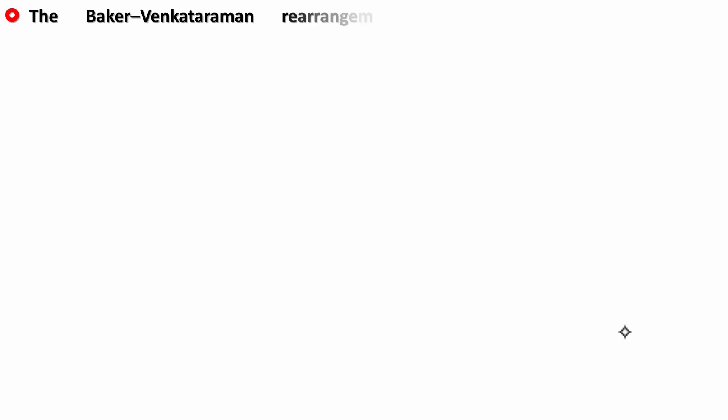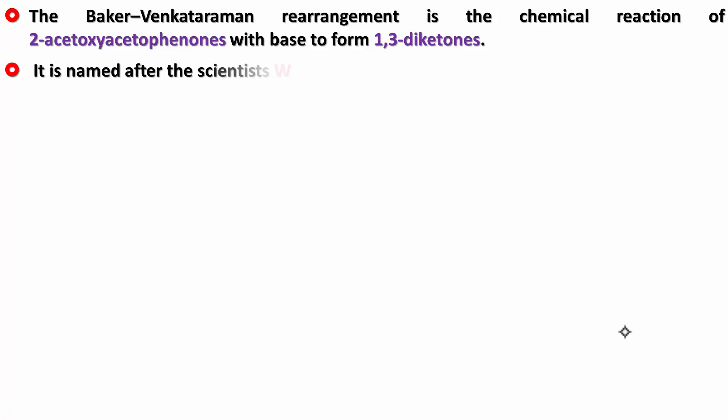The Baker-Venkataraman rearrangement is the chemical reaction of 2-acetoxy-acetophenone with base to form 1,3-diketones. It is named after the two scientists who discovered it: Wilson Baker and Krishnaswami Venkataraman.